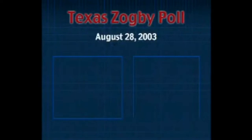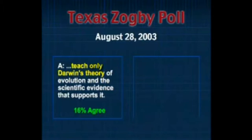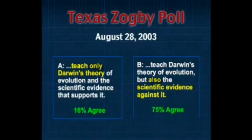Most of the people in our country believe that we should look at all the scientific evidence and all the scientific alternatives. In Texas, just a few years ago, Zogby took a poll testing this concept. Under the proposition 'teach only Darwin's theory of evolution,' 16% agreed. Regarding the proposition to also teach the scientific evidence against it, 75% agreed. But the 16% dominate and you cannot do it in the classroom — or at least they do not do it. It is not in the textbooks.